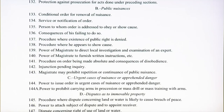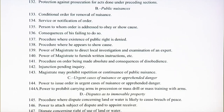Chapter 10 also covers public nuisances — conditional order for removal of nuisance, service or notification of order, the person to whom the order is addressed to obey or show cause, procedure where existence of public right is denied, and procedure where the person appears to show cause. It also talks about urgent cases of nuisance or apprehended danger — here comes Section 144, one of the most discussed and debated sections of the CrPC, which gives the power to issue orders in urgent cases of nuisance or apprehended danger, and prohibit carrying arms in processions or mass drill or mass training with arms.